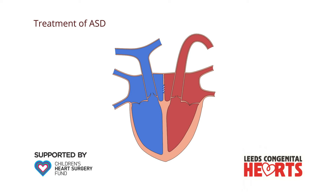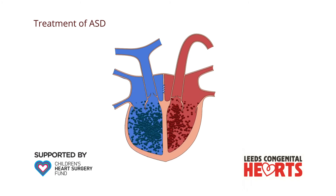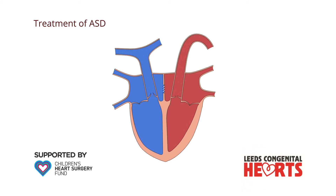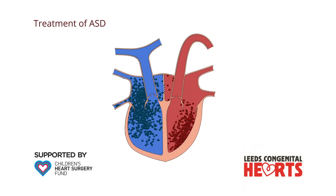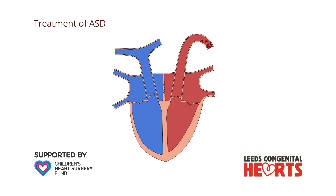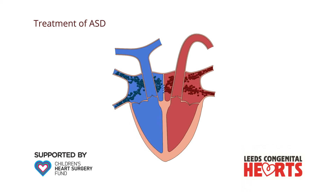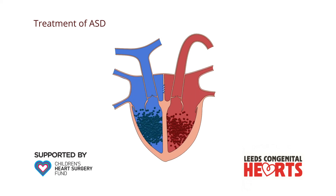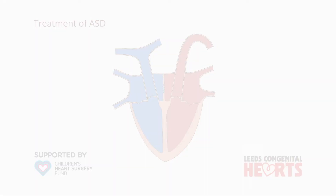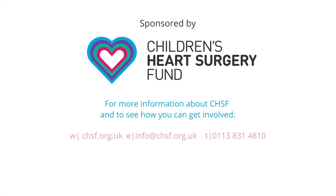Surgery involves either directly stitching up the hole or sewing in a patch of material over the hole, preventing blood flowing through it and allowing the enlarged heart to reduce in size. Once an ASD has been closed, the right side of the heart becomes smaller. It may return to a completely normal size, but doesn't always, especially if a larger hole is not closed until later in life.